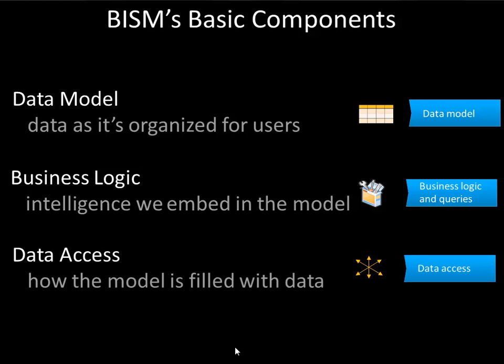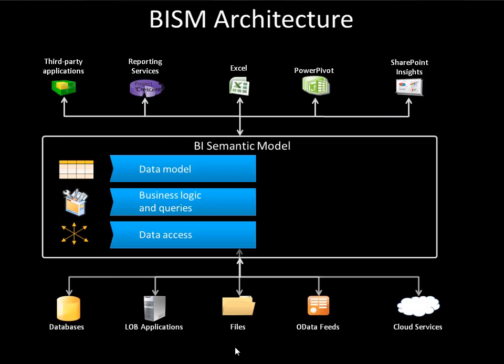The third component is data access. In data access, we are pulling data out of its original source and putting it into our data model and applying the business logic to it. So we have these three basic elements of the semantic model, and next we'll look at how those elements fit in the overall architecture.